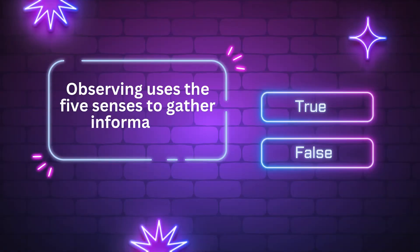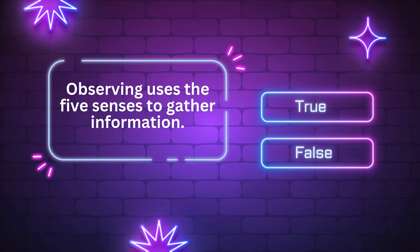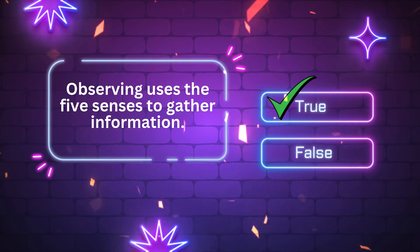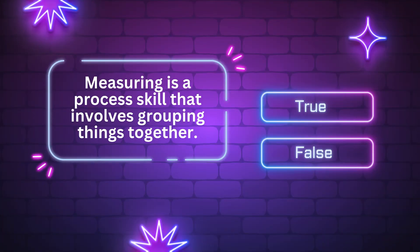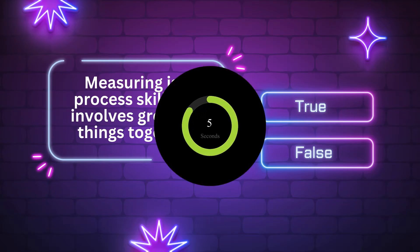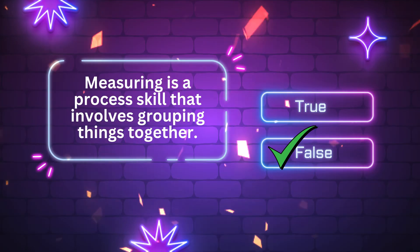Observing uses the five senses to gather information. True or false? The answer is true. Measuring is a process skill that involves grouping things together. True or false? The answer is false.